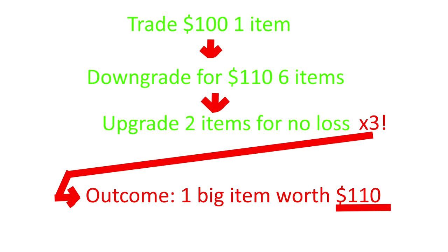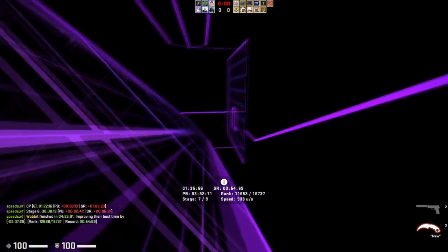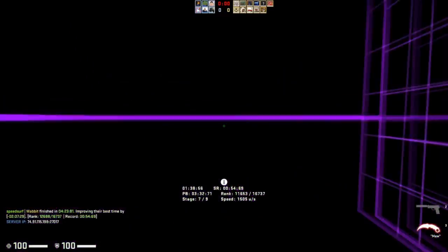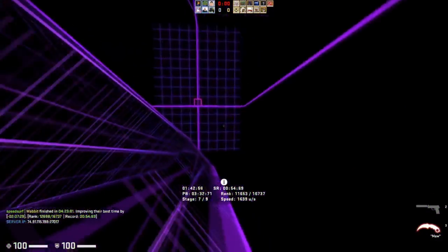Once you do that for all 6 items, you should ideally have 3 items. If you do that again for 2 of those items, you're going to have 2 items plus the leftover third, giving you a total of 2 items. Then all you have to do is upgrade one more time and you'll have a bigger item without losing the profit margin. I'll have a graphic up on screen to explain that a little bit better. That's generally how you want to do upgrading and downgrading in 2020.